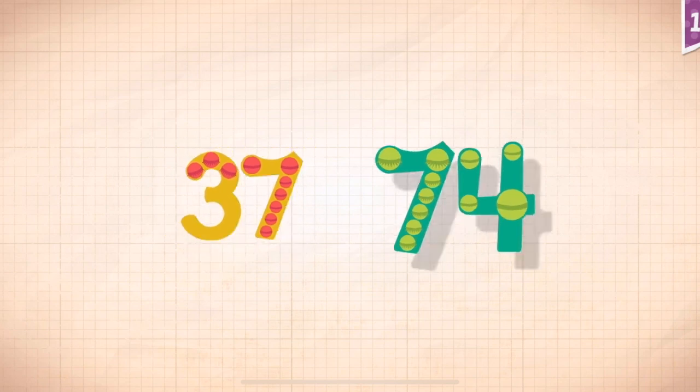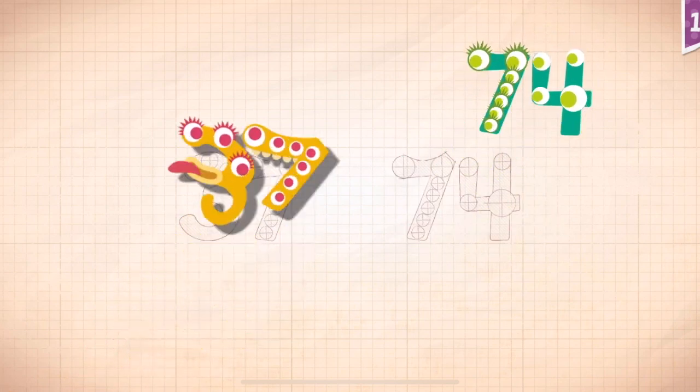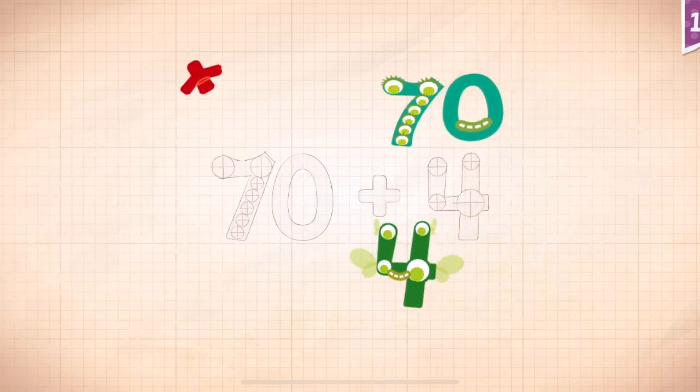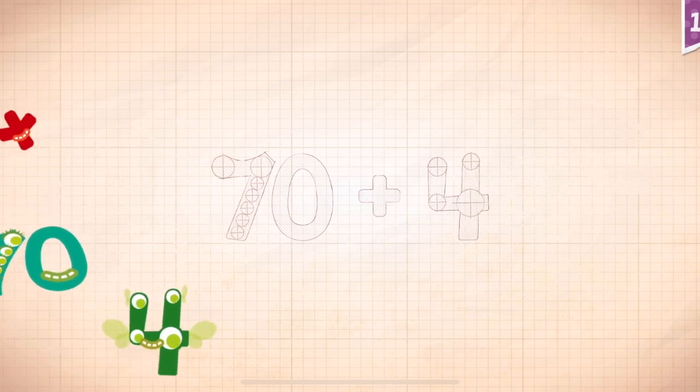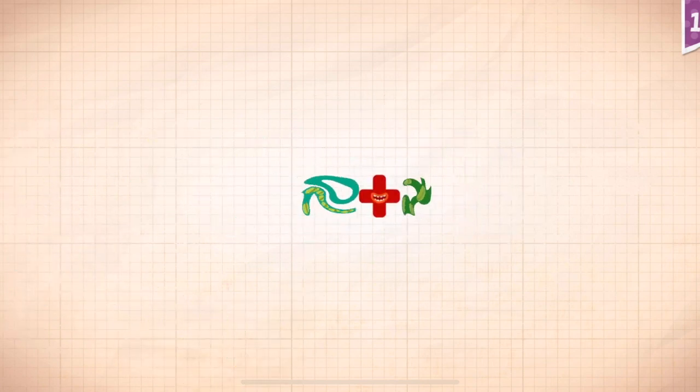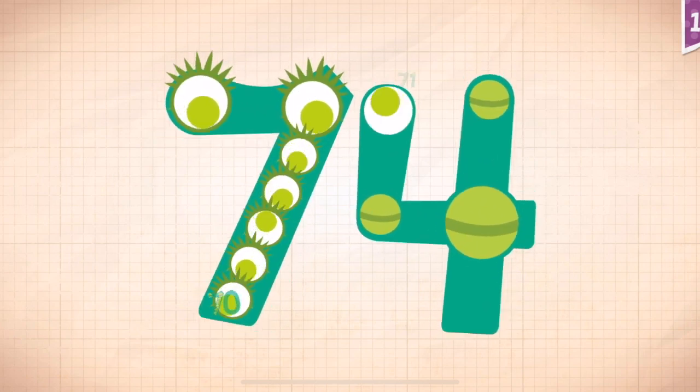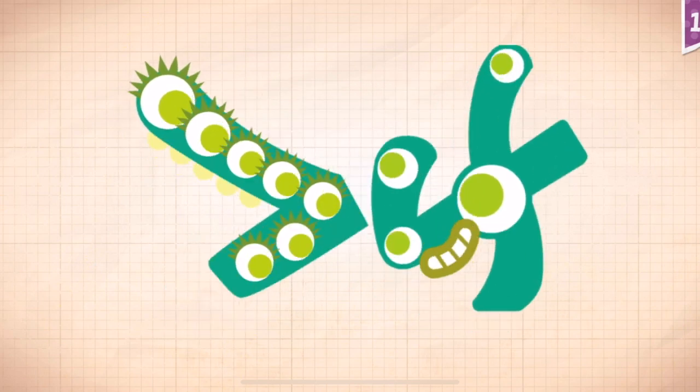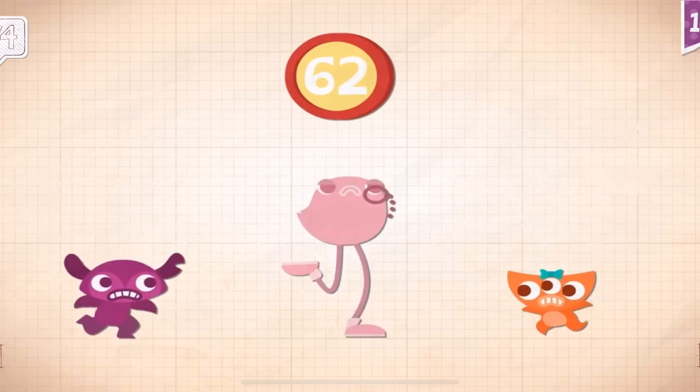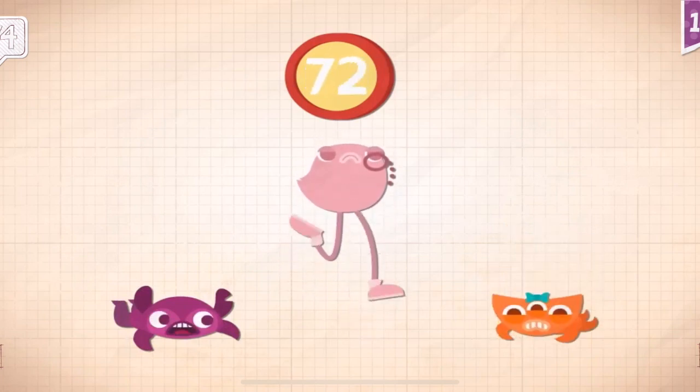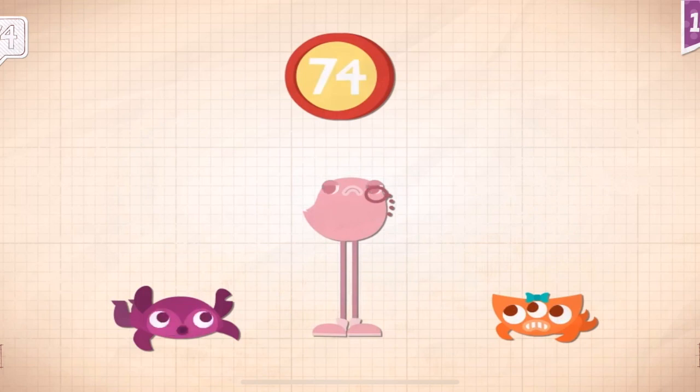Count by thirty-sevens. 37, 74. 70 plus 4 equals 74. 10, 20, 30, 40, 50, 60, 70, 74. Dapper Dandy won the contest by hopping on one foot 74 times.